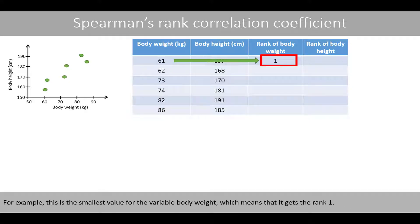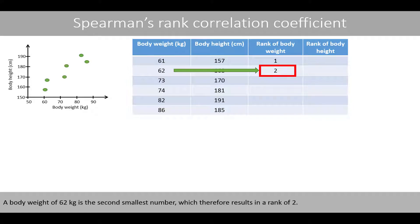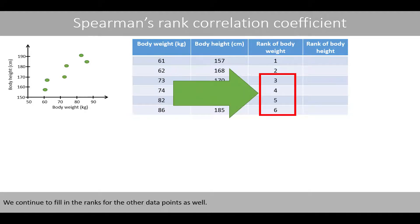For example, this is the smallest value for the variable body weight, which means that it gets rank 1. A body weight of 62 kilos is the second smallest number, which therefore results in a rank of 2. We continue to fill in the ranks for the other data points as well.